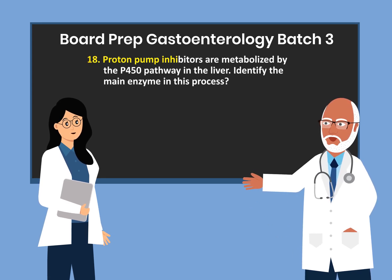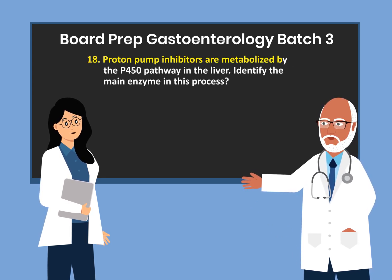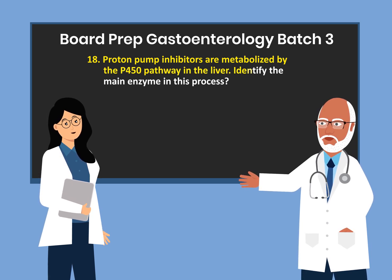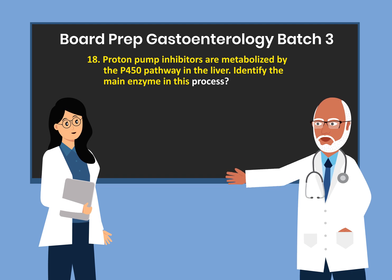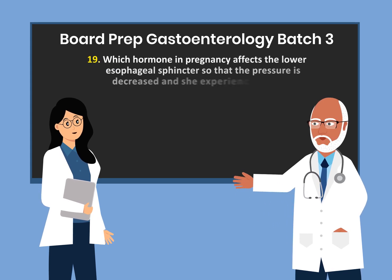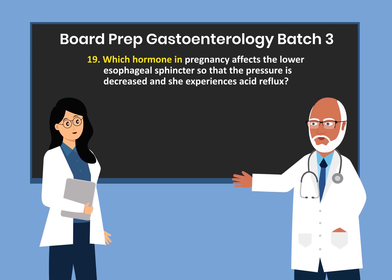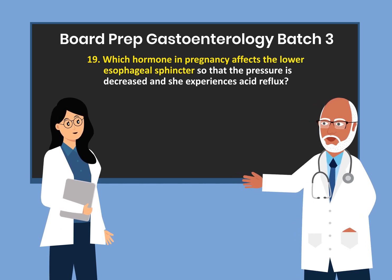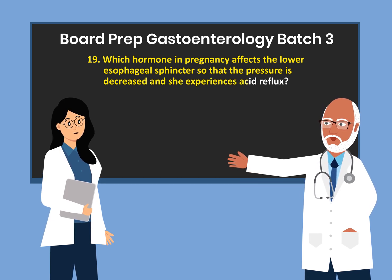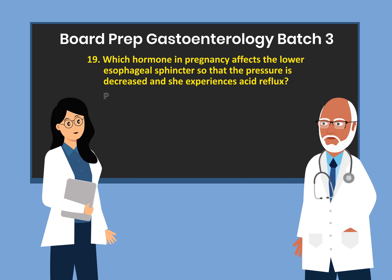Question 18. Proton pump inhibitors are metabolized by the P450 pathway in the liver. Identify the main enzyme in this process. CYP2C19. Question 19. Which hormone in pregnancy affects the lower esophageal sphincter so that the pressure is decreased and she experiences acid reflux? Progesterone.